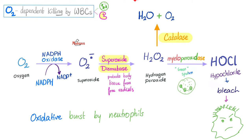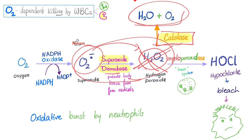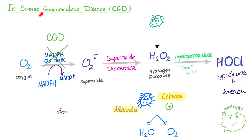Nocardia is sneaky — this is how it evades your immune system. It breaks down your toxic hydrogen peroxide via catalase. It breaks down your superoxide via superoxide dismutase, converting it to hydrogen peroxide, then breaking that down to harmless oxygen and water. This is hashtag evasion of your immune system. The patient who will suffer the most is one with chronic granulomatous disease — deficient in NADPH oxidase — having less superoxide and less hydrogen peroxide. Even that tiny amount of hydrogen peroxide, Nocardia will break down into harmless oxygen and water.